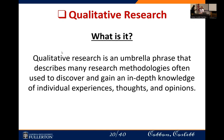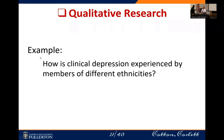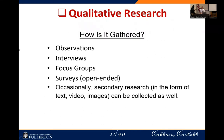An example: how is clinical depression experienced by members of different ethnicities? Think of thoughts, experiences, perceptions, beliefs. How is qualitative research gathered? Unlike quantitative data, a lot of qualitative research is collected through observation, interviews, focus groups, and open-ended surveys. These are open-ended, allowing participants to voice in their own words what they're experiencing. Occasionally, secondary research in the form of text, video, and images is also used.